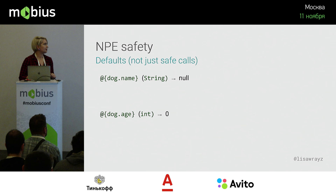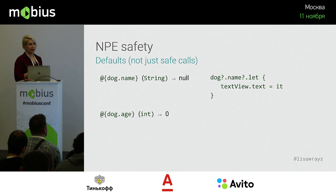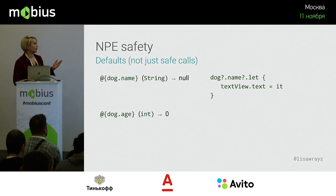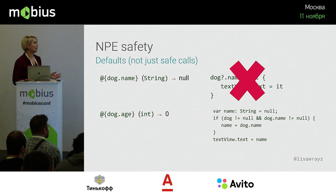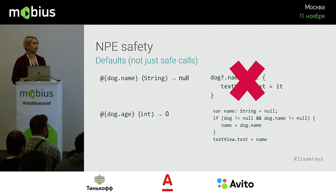The expression language has null safety, but it's quite different from Kotlin. You might think that the expression `dog.name` would only set the text view's text if `dog` and `name` are not null. Instead, there is a default value for each type: a String defaults to null, an integer to zero. You can get some really unexpected results depending on nullability — for example, zero is `View.GONE`, so you may not expect this. Just be careful.